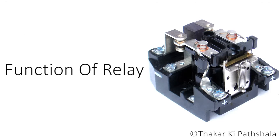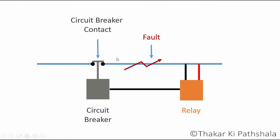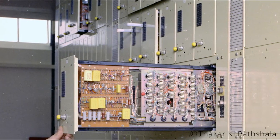Now for relay it is somewhat more complicated. Unlike the circuit breaker, the uses of relay are endless. Basically, if we generalize the use of relay, we can say that we use relays whenever we need to control a high power circuit with a low power circuit. In other words, relays are conditional switches. Sometimes in low power applications they also act as a switching device, but in high power circuitry they are used to sense the faulty condition as well as to send an actuating signal to operate the circuit breaker in order to open the contact and turn off the supply. We can create various kinds of logic via relay.